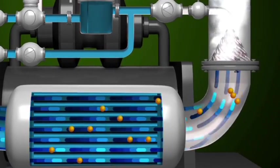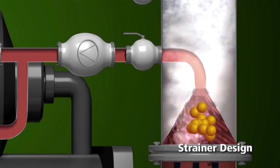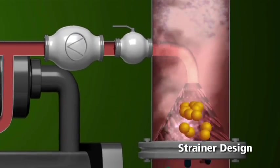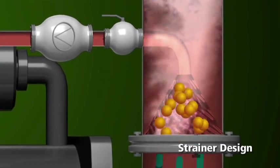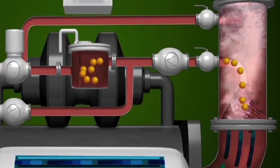It uses a patented funnel-shaped design that cleans the sponge balls by removing dirt from the surface of the ball. This design also maximizes the flow rate of condenser water and prevents sponge balls from being trapped.